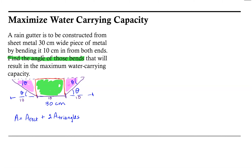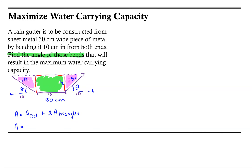The area of the rectangle requires the height, which we don't know yet, so let's label that h. The area of the rectangle is 10 times h, plus then we need to work with the area of the triangles.